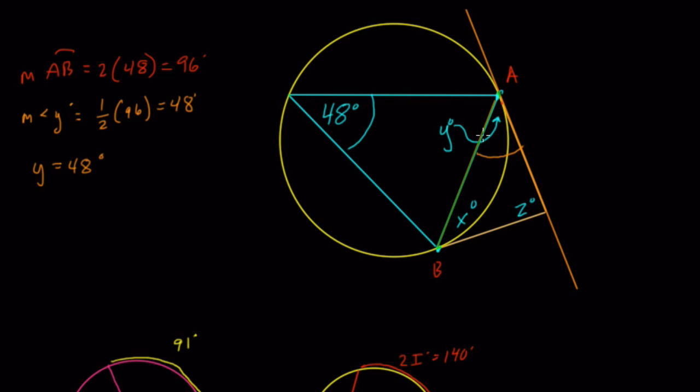But look at X. X is over here. And what do we notice? Well, if we draw another tangent line and another chord here, we get another angle that's a tangent chord angle. And that'll also be half the inscribed arc. So X is also equal to Y. It's also equal to 48 degrees. X equals 48 degrees.